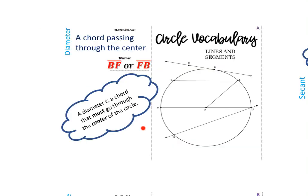The next word is diameter. The diameter is a type of chord that passes through the center. A diameter is a chord that must go through the center of the circle — you can think of it as the line segment that cuts the circle in half. In this case, BF is the only diameter. Not every chord is a diameter, but every diameter does have to be a chord.